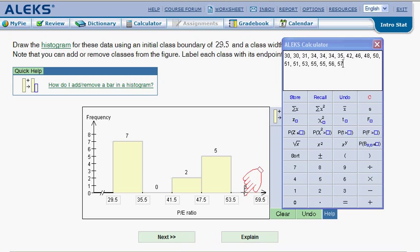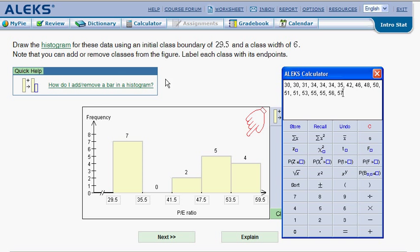Now once again, if you were to add up these bars or add up the heights of each of these bars, this should total out to be our 21 values that we said we had in the first place. And so let's go in there and check it and see if Alex is happy. And they are.